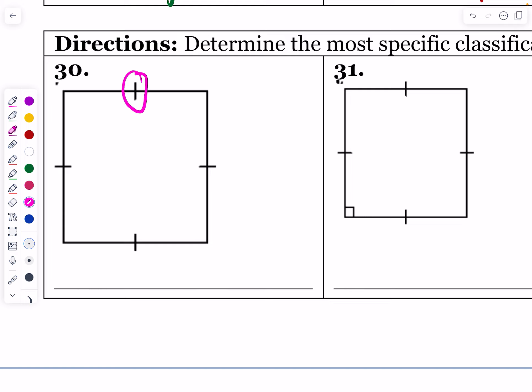So what is pictured in number 30? We have four congruent sides marked. By definition, that makes this shape a rhombus. It says give a reason, explain. We're going to say because of the four congruent sides.